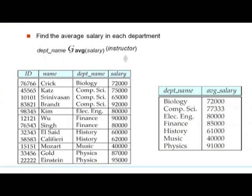Similarly, min and max can be done easily using very few variables. If you want to find the median or other holistic aggregates, you may have to load all values into memory, sort them, and then find the median, though there are tricks involving pre-sorting.